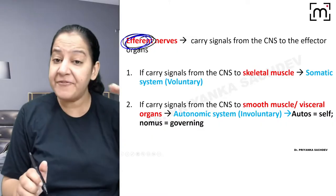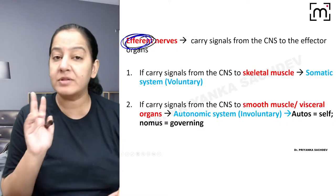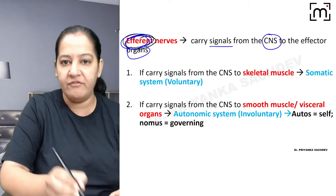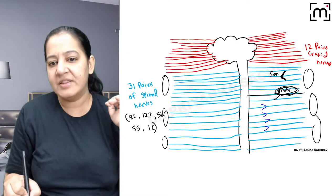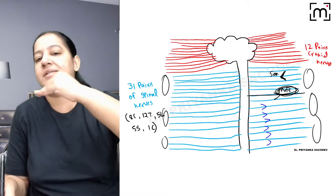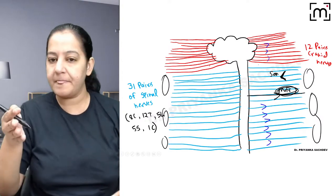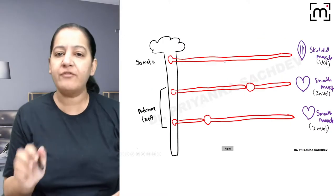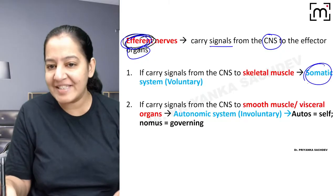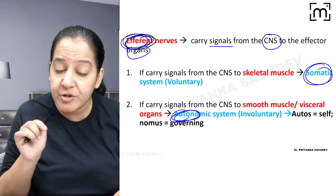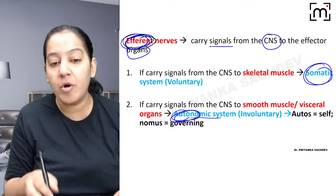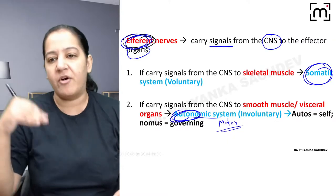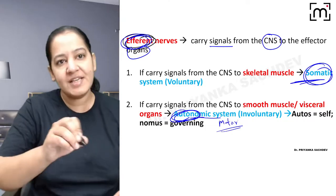Efferent nerves are important to understand the autonomic nervous system. These efferent nerves carry signal from the CNS to the organ — they can be cranial or spinal. They are of two types: somatic and autonomic, which is our chapter today. Autonomic nervous system is all about motor nerves — it is not about sensory nerves, but about one type of motor nerve.